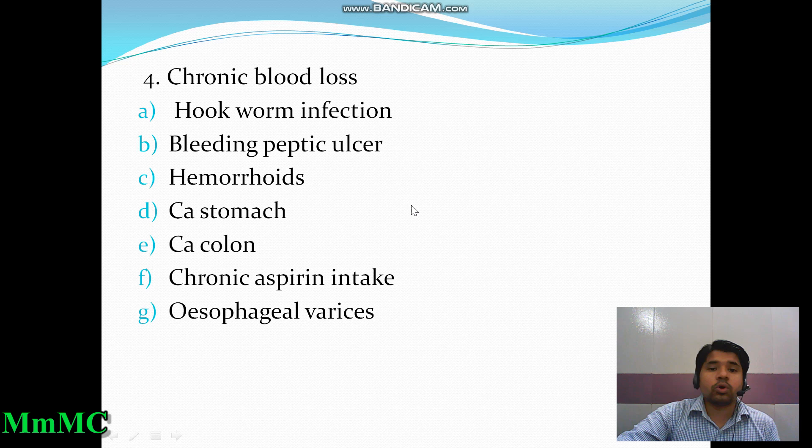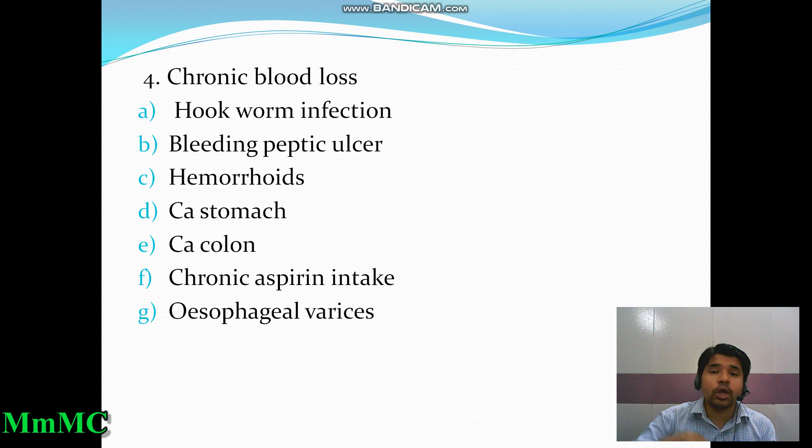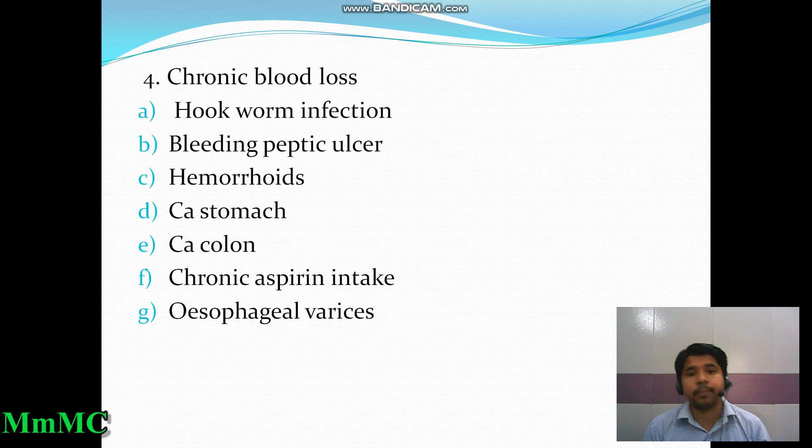Another cause is chronic blood loss, such as hookworm infection, bleeding peptic ulcer disease — where long-term blood loss from the body chronically causes iron deficiency anemia — and hemorrhoids, which also result in loss of blood.